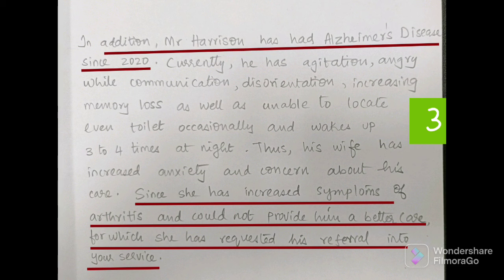Then write the patient's wife's concern: 'Thus, his wife has increased anxiety and concern about his care, since she has increased symptoms of arthritis and could not provide him better care, for which she has requested his referral into your service.' This is a request from his wife, not from our side — that is why we write it this way. It is now clear: the patient has delayed wound healing as well as Alzheimer's disease, and the patient's wife has arthritis problems, making it very difficult for her to care for her husband.